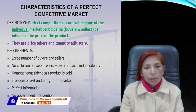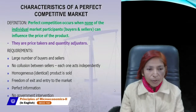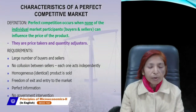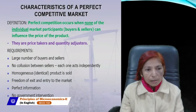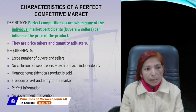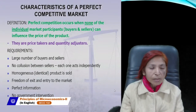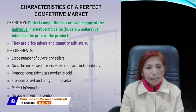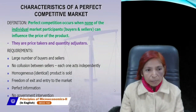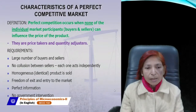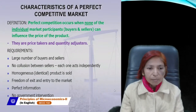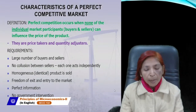The first property is that there are a large number of buyers and sellers, and all sellers produce the same or homogeneous — also called identical — product. There is no difference of any type, such as color, size, design, or packing. The next property is no collusion between sellers — each one acts independently. All sellers work independently and are not dependent on each other.